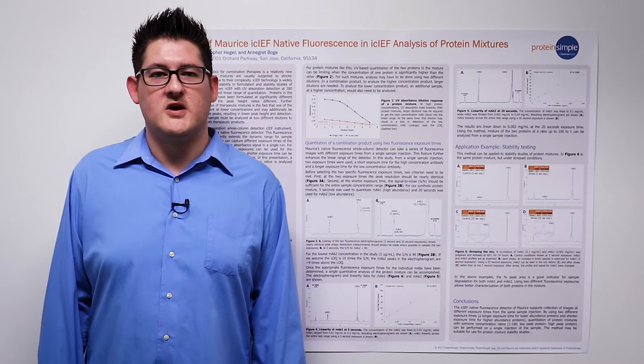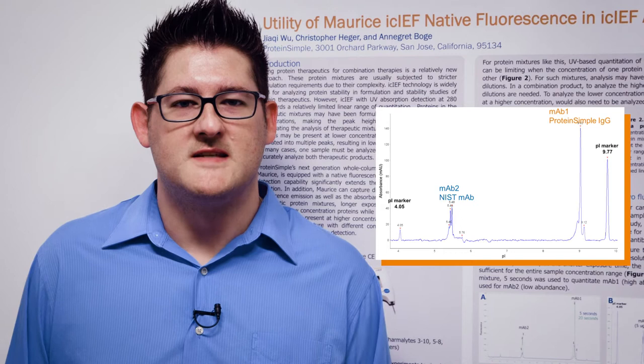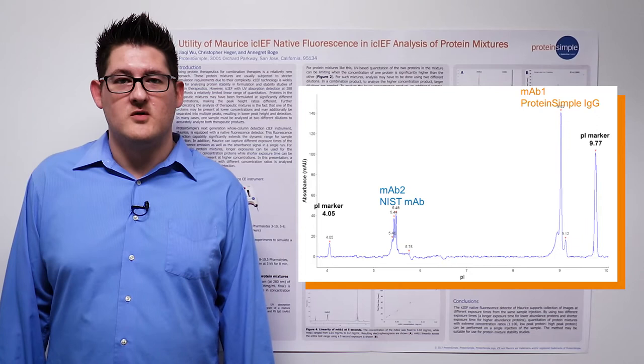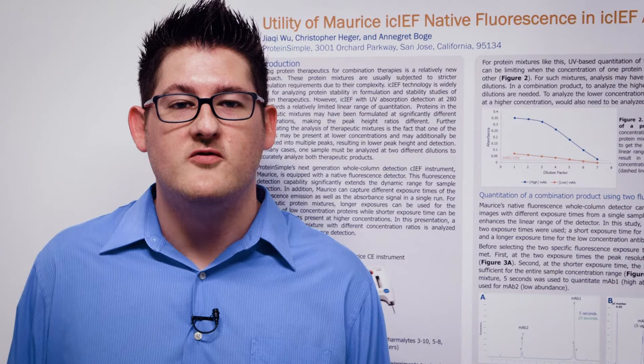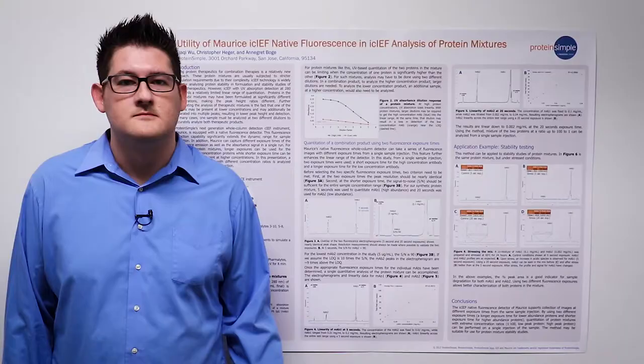We generated a model system to mimic a therapeutic co-mixture by using the NISTmAb and our ProteinSimple IgG. These antibodies have significantly different isoelectric points, enabling their separation by IEF. For the study, we placed the two proteins at 10 to 20 fold concentration differences. In this situation, on a UV-based instrument, the same sample would require dilution, which will decrease sample throughput and increase the complexity of data analysis.